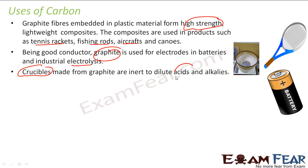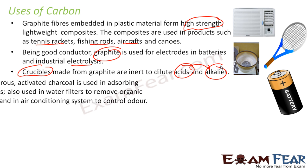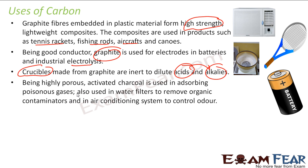Graphite is resistant to heat, so it is used in crucibles. Also, it is inert to dilute acids and alkalis — carbon doesn't react with alkali and acids. Since charcoal is highly porous, it is used in absorbing poisonous gases, and also it is used in water filters.